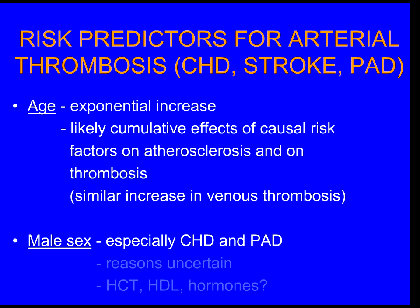Males get coronary heart disease and peripheral arterial disease sooner than women at an earlier age in life, and the reasons we still don't really understand. From puberty, with the surge in testosterone, males develop a higher hematocrit, so they have higher blood viscosity. They may have different platelet behavior in whole blood. But meta-analysis of the association of hematocrit as a predictor of coronary heart disease and stroke — these associations are not quantitatively sufficient to explain why males have higher events.